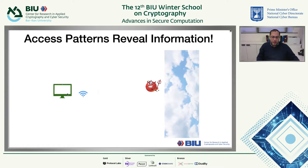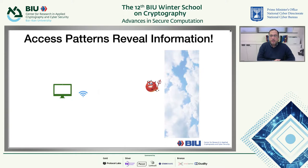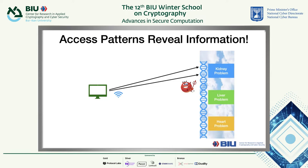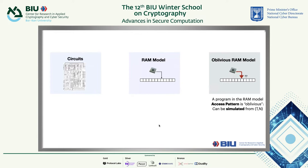This is also interesting in the case of cloud computing. Suppose you have a program and upload encrypted information to the cloud — even though the data is encrypted, the memory locations you access reveal sensitive information. For example, if a medical doctor uploads genomic information and always accesses regions related to the kidney rather than the liver or heart, the server can infer the patient has a kidney problem, not a heart problem.